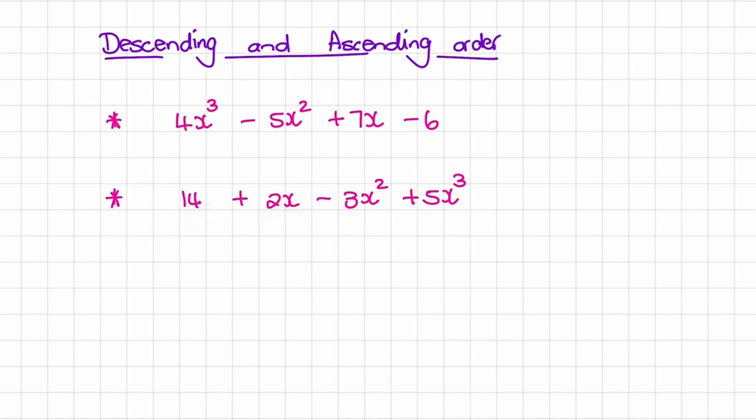Now there's a slight difference between the two examples. So let's look at the first one. We have 4x cubed, then negative 5x squared, plus 7x minus 6.